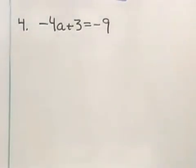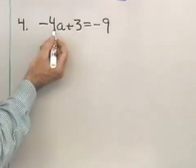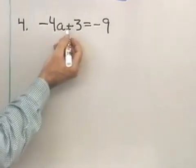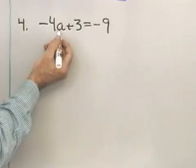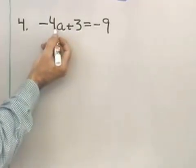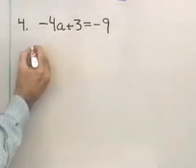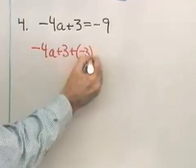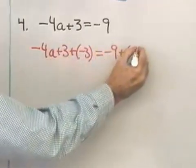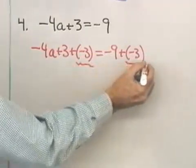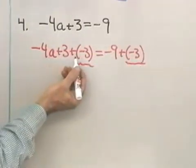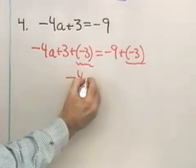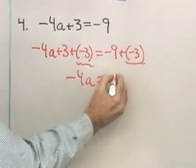Here's another example. This time I have negative 4a plus 3 on the left side of the equation, and negative 9 on the right side. I need to get rid of both the 3 and the negative 4. The 3 is added to the variable, and the negative 4 is multiplied times the variable. I get rid of addition with addition and multiplication with multiplication — I want to do the addition first. So, negative 4a plus 3 plus negative 3 equals negative 9 plus negative 3. Adding negative 3 to both sides gives negative 4a on the left, and negative 12 on the right.